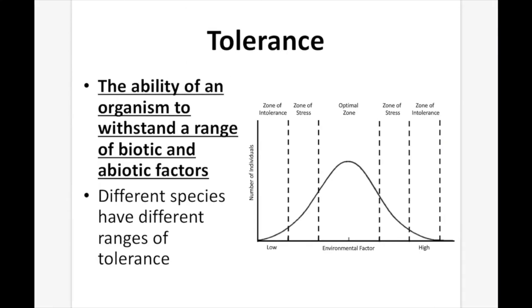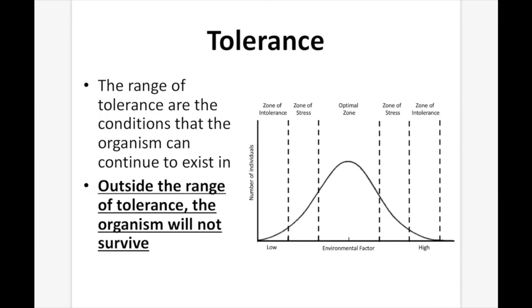So you can see how we're impacting more than one species by limiting another. Tolerance is the ability of an organism to withstand a range of biotic and abiotic factors. Different species have different ranges of tolerance. The range of tolerance refers to the conditions that an organism can continue to exist in. Outside the range of tolerance, the organism will not survive. The optimal zone is the best zone, the zone of stress has less population, and the zone of intolerance is when the species can no longer survive at the extent of its range.